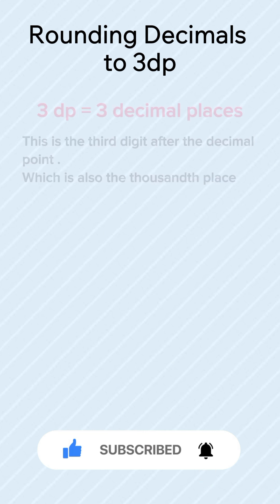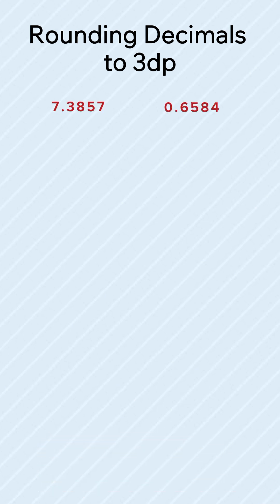Let's take these examples. Round the following to three decimal places. Number 1: 7.3857.